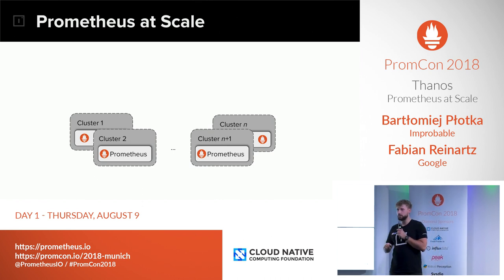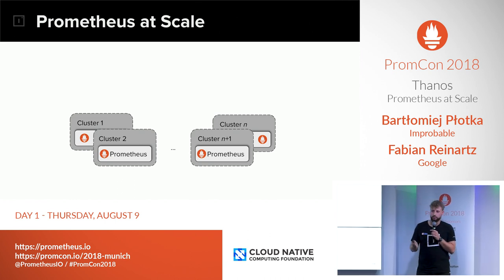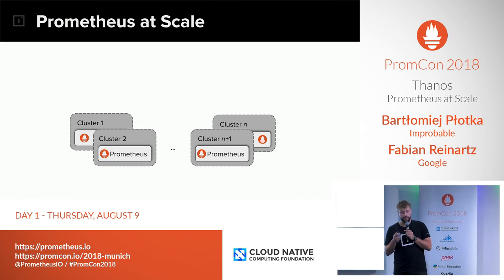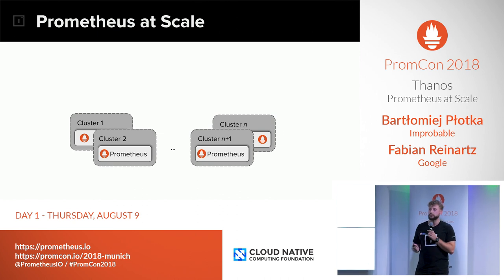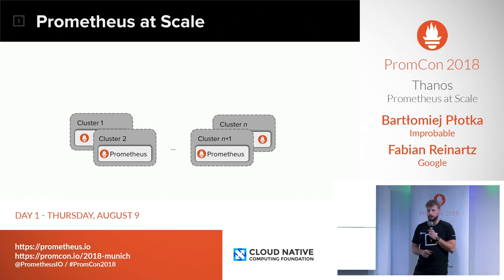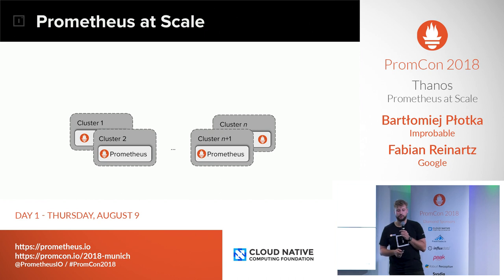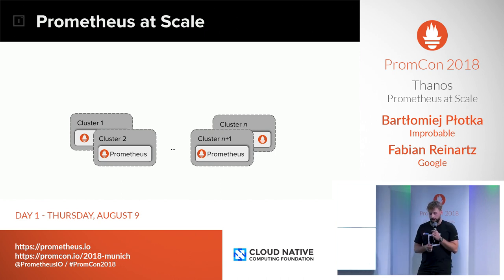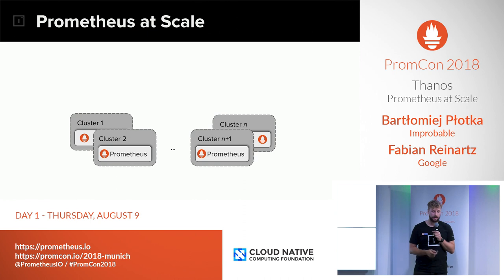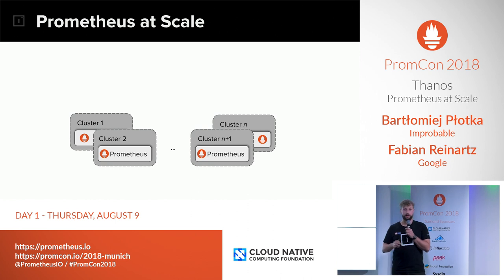But how do all of those features fit together when we are talking about scale? When we talk about scale that is out of scope for a single Prometheus server, we are not necessarily talking about performance limits. Usually the reason why people scale out Prometheus servers is because the services they want to monitor — the monitoring targets — are grouped within multiple isolated clusters or data centers spread across the world in different geographical regions. Since the recommended way to run Prometheus is within the same failure domain, the same network, the same region, we have no other choice than running one or more Prometheus servers in each cluster.